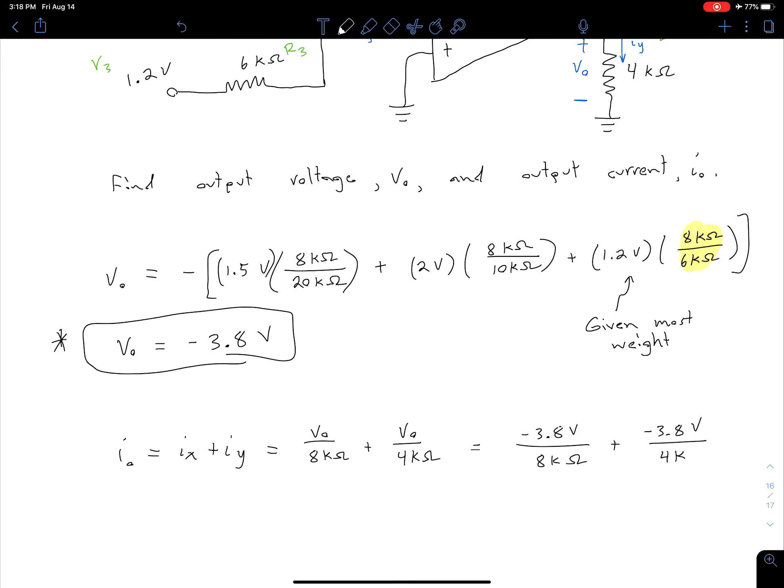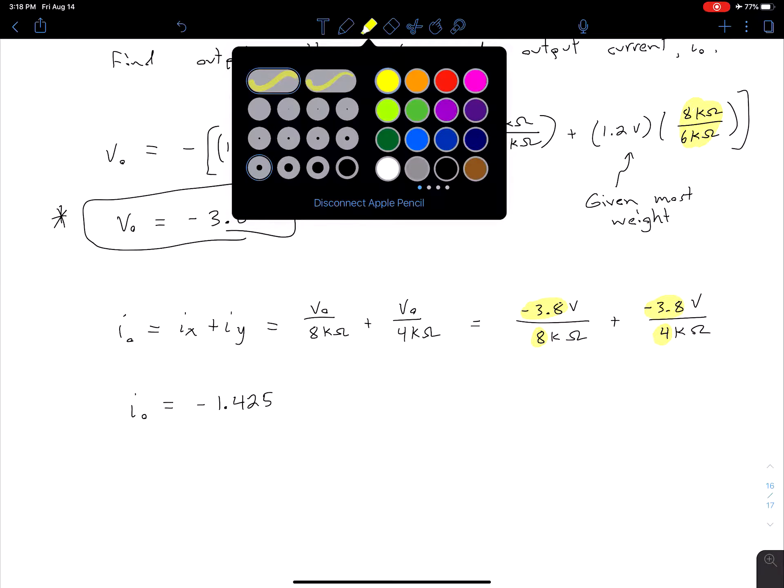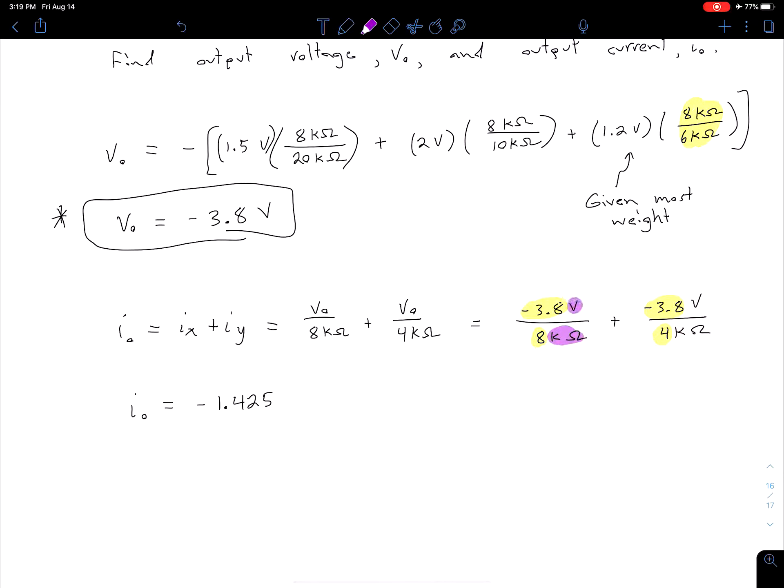If you're more comfortable instead of writing 8 kΩ and 4 kΩ, you can directly write 8,000 and 4,000, or we could say we have volts and kΩ which means our current is going to be in milliamps, whatever you're more comfortable with. Either way, if you plug this into your calculator, so if we plug this in and we sort of just focus on the numbers -3.8/8, -3.8/4, what our calculator is going to tell us is I_out is equal to -1.425.